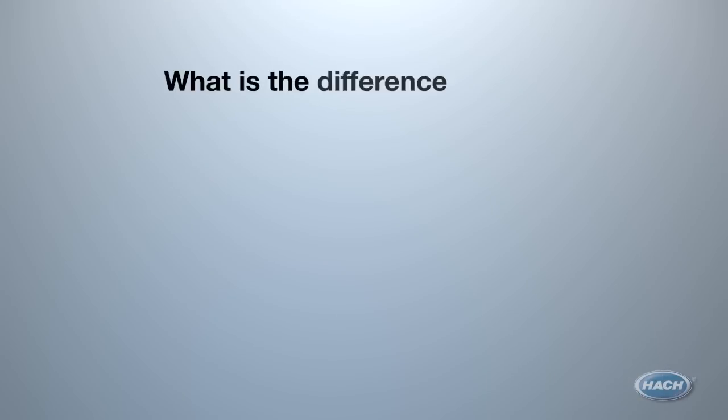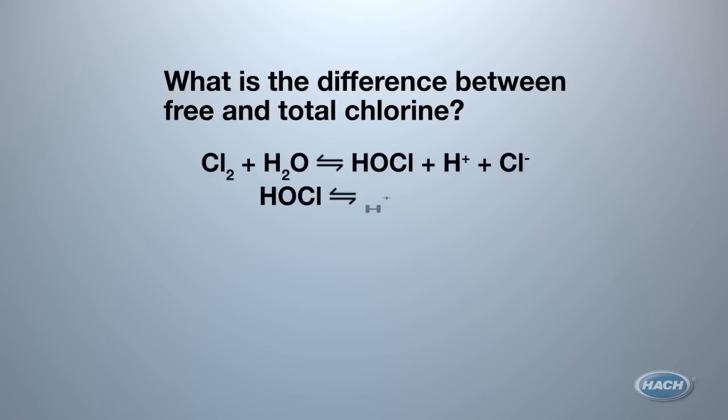Let's take a moment to make an important differentiation. What is the difference between free and total chlorine? Free chlorine refers to both hypochlorous acid and the hypochlorite ion, or bleach, and is the form of chemical commonly added to water systems for disinfection.